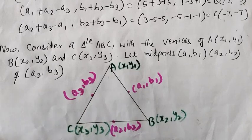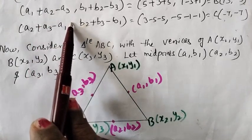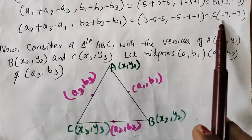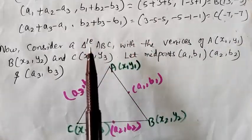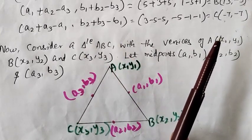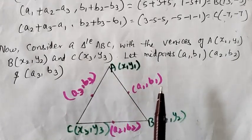What do we do? We use this vertex formula: a1 plus a2. This is the formula to find the vertices of the triangle from the given midpoints. If we apply the formula correctly, we can find the vertices A(x1,y1), B(x2,y2), C(x3,y3) using the formula.